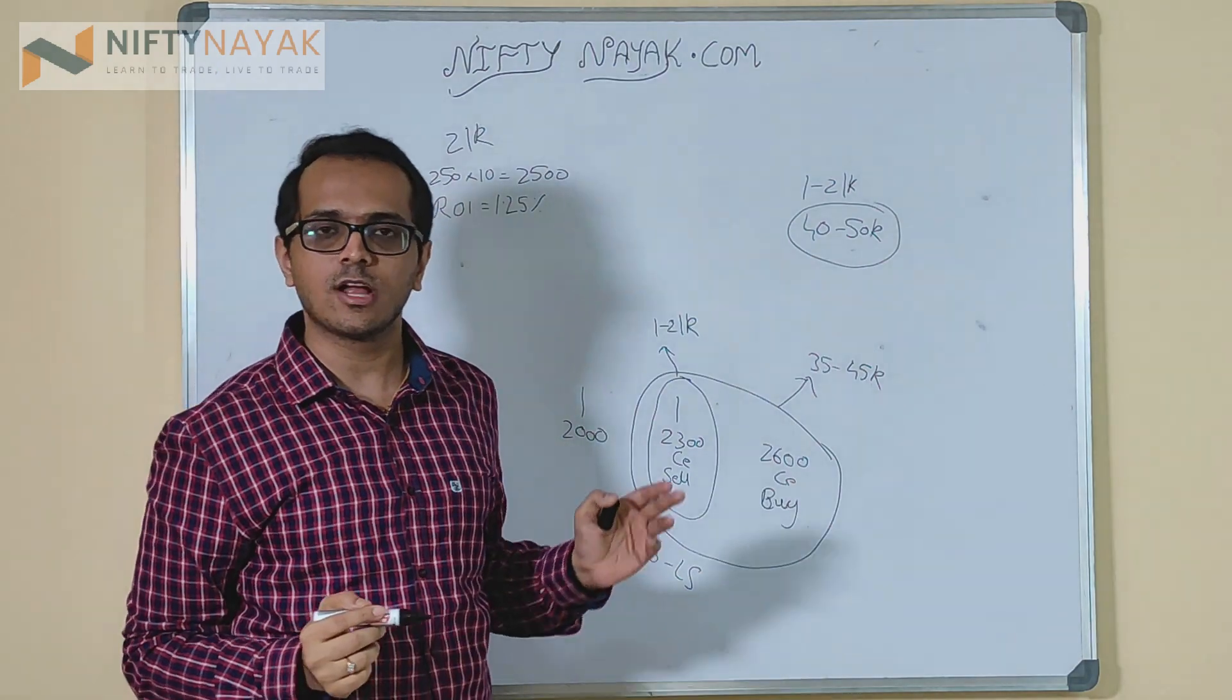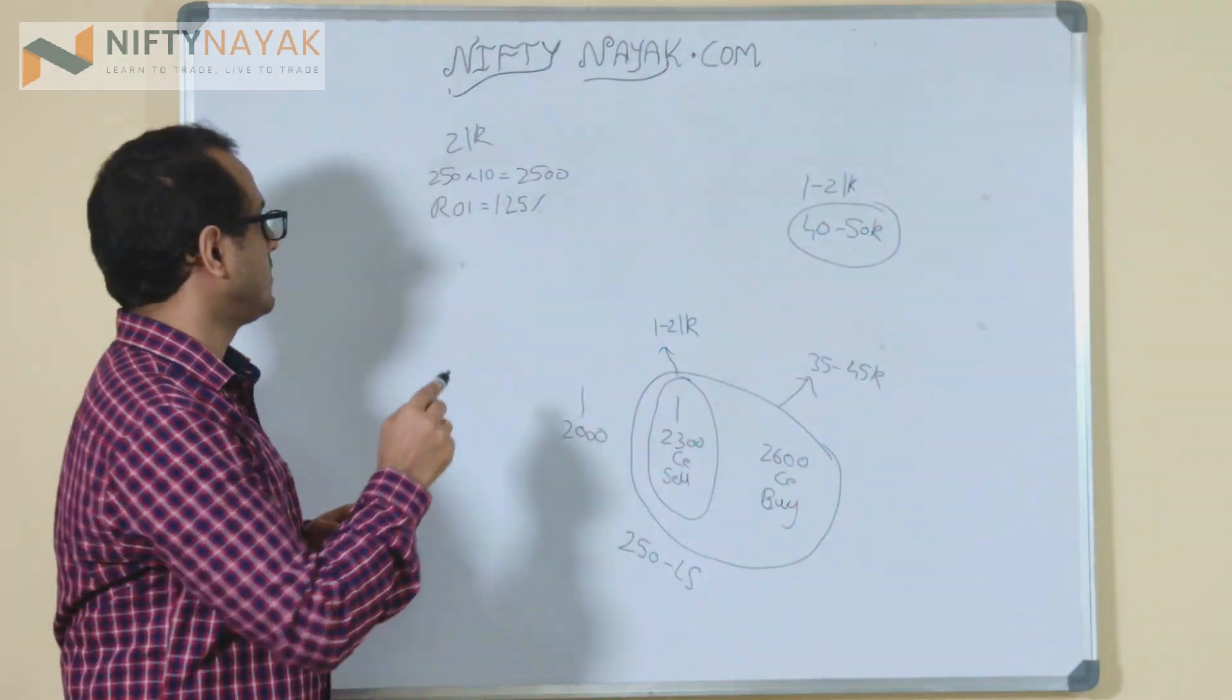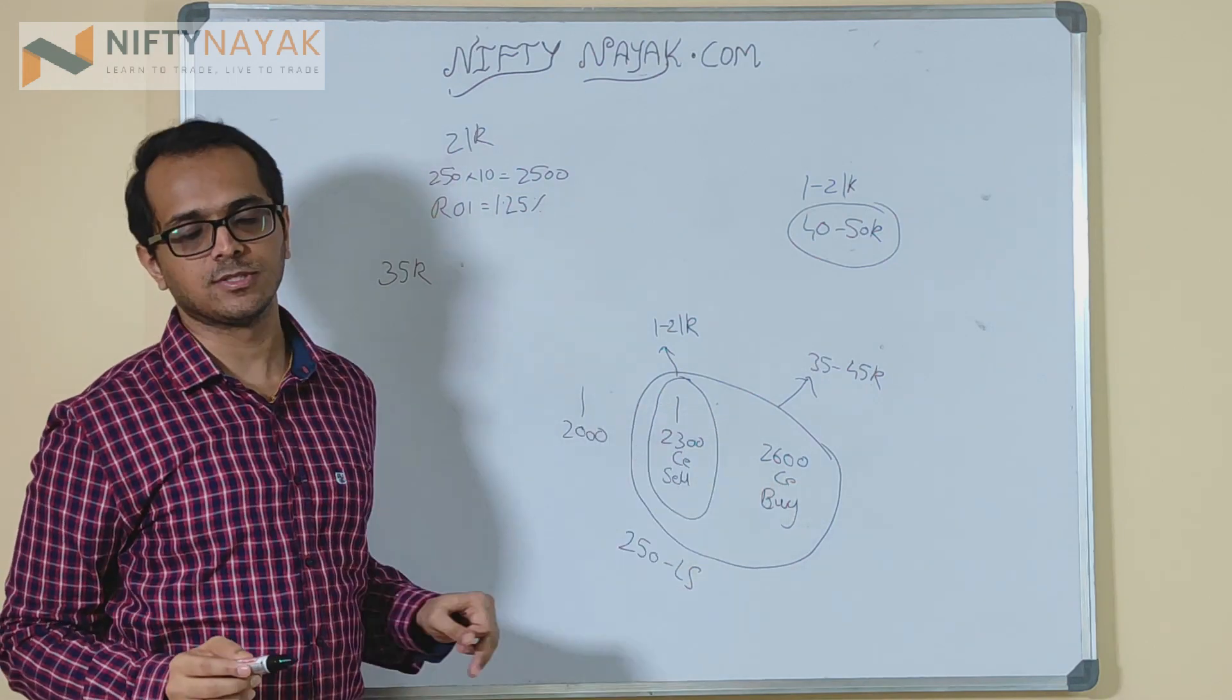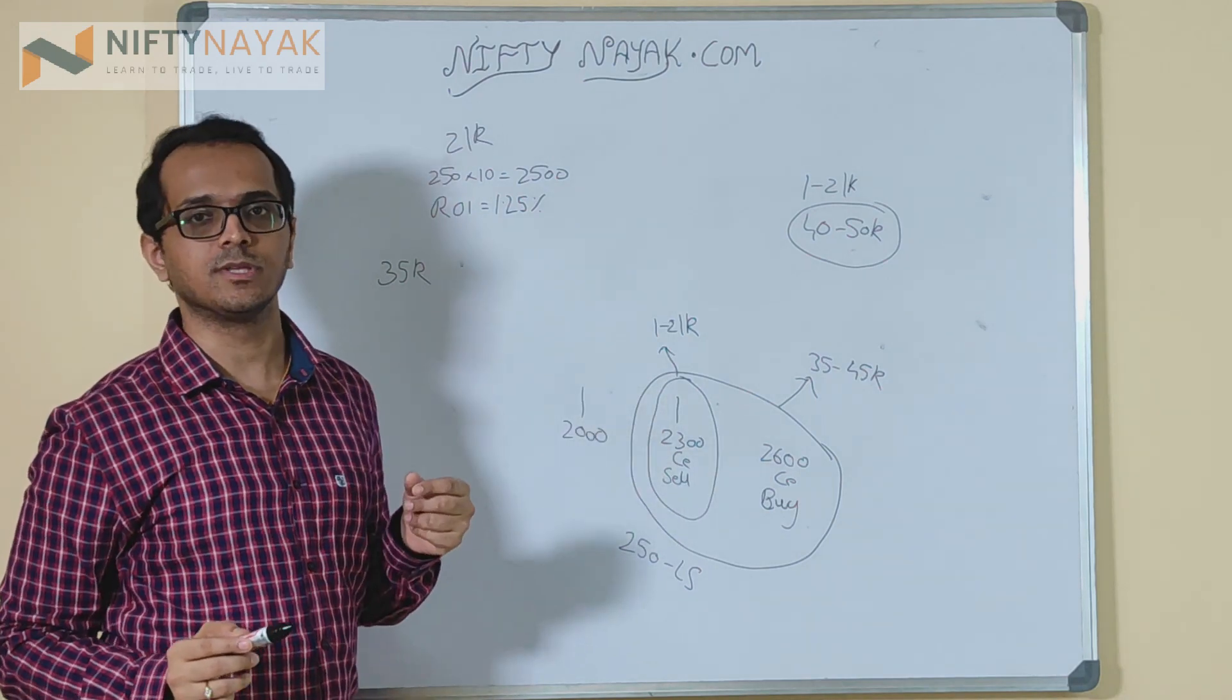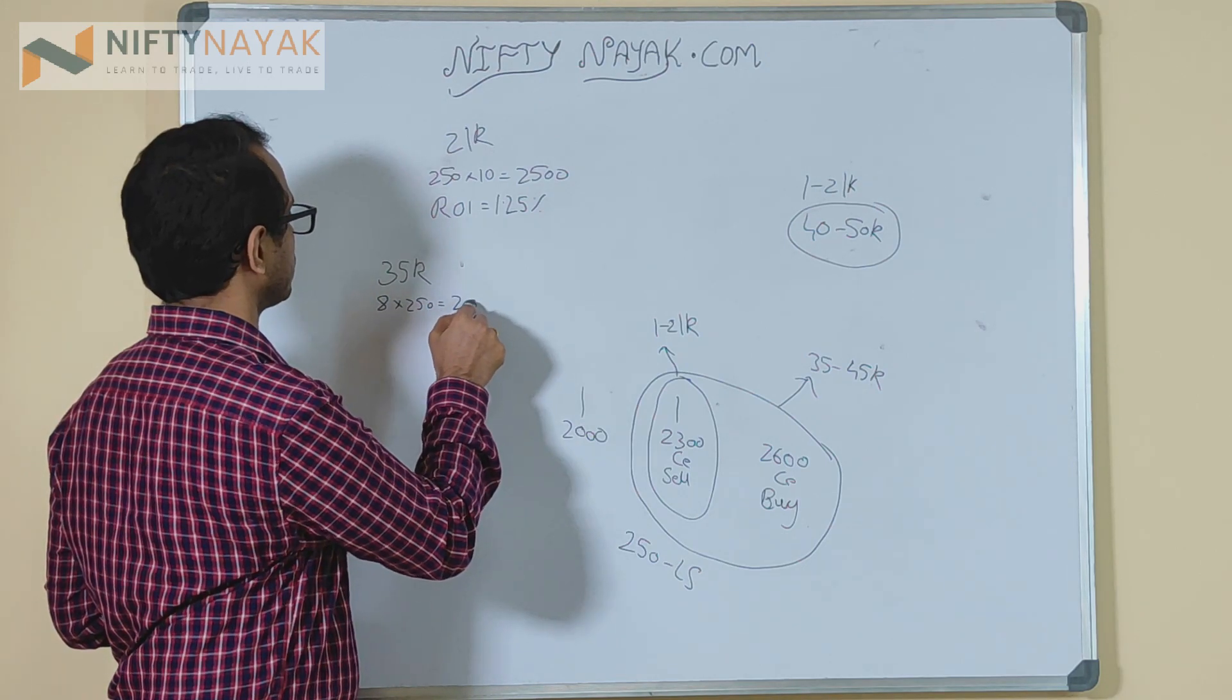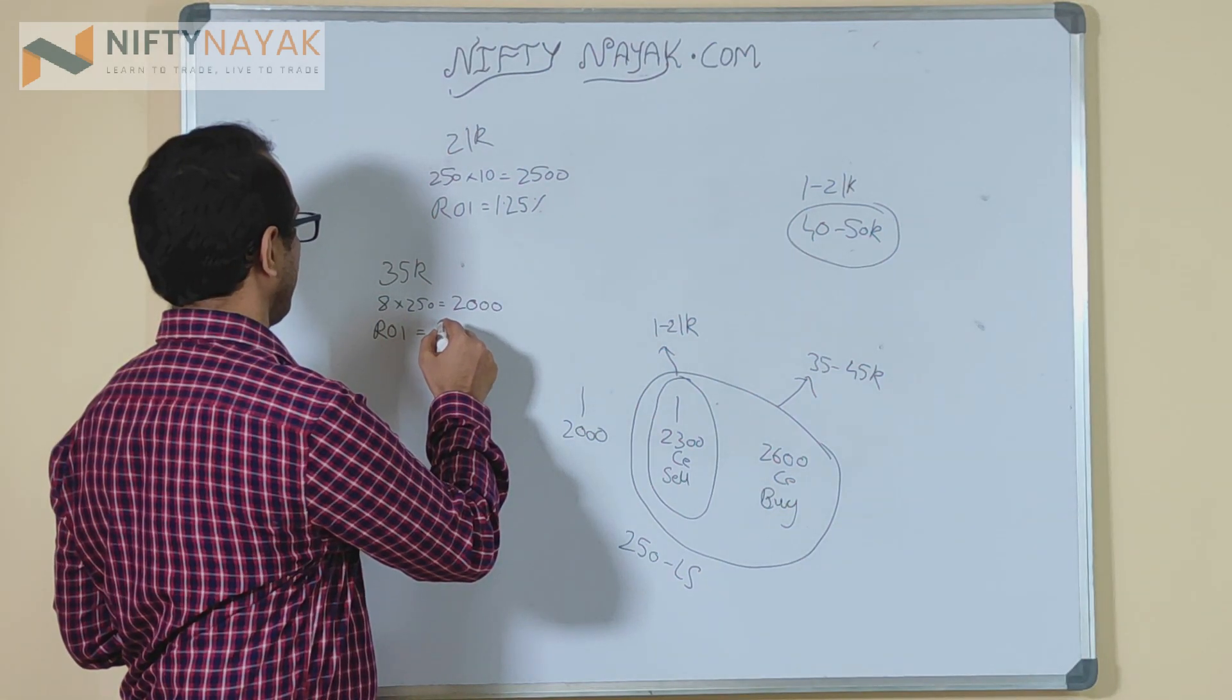Let's say you have bought 2600 call for 2 rupees. In this case the capital which you have deployed is approximately 35k. You have bought an option for 2 rupees whereas you have sold an option for 10 rupees, so the net what you have made is 8 rupees. If this trade works out, your profit is going to be 8 into 250 which is equal to 2000. So now your return on investment is going to be approximately 5 to 6 percent.